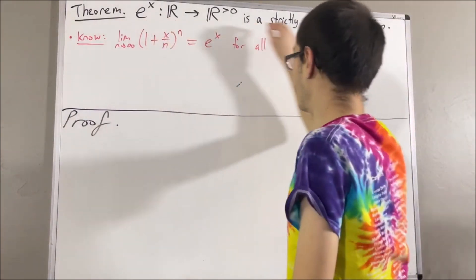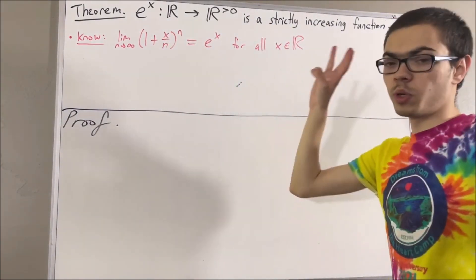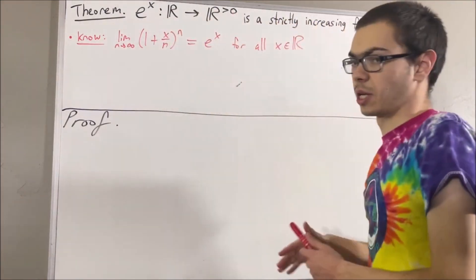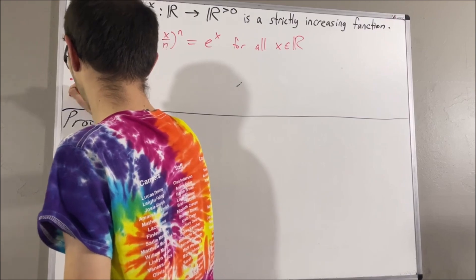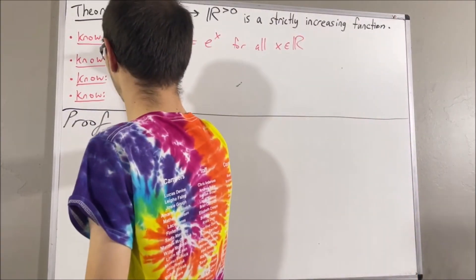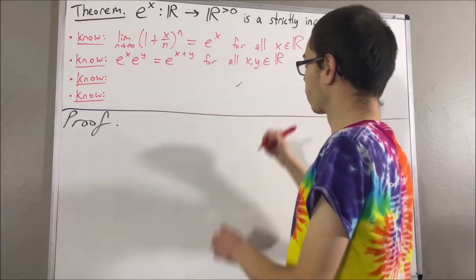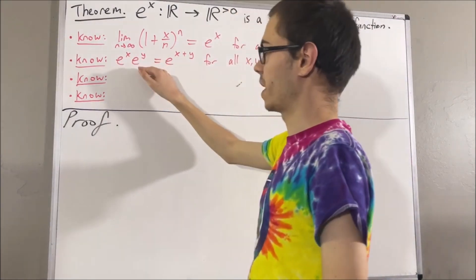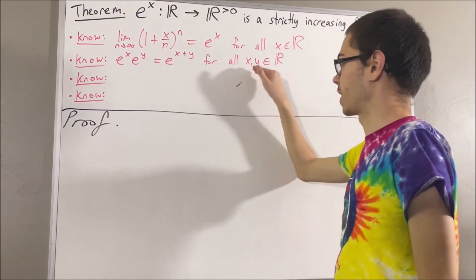In proving this theorem, we are going to use three preliminary results about the exponential function. Here's the first one: e to the x times e to the y is equal to e to the x plus y, for all real numbers x and y.